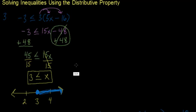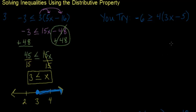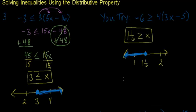Now you try: negative six is greater than or equal to four times the quantity three x minus five. Go ahead and pause, solve, and check your answer. You should have gotten this solution and this graph. If you got it, you're ready to move on. If not, pause again and try again.